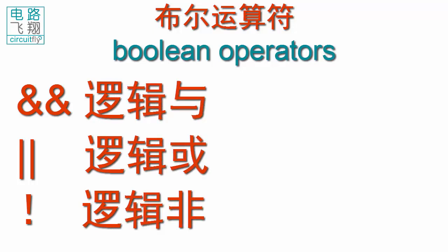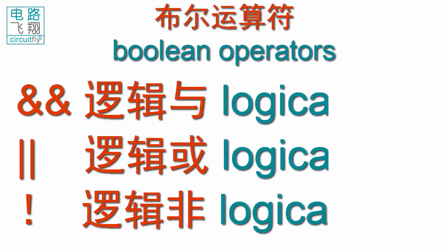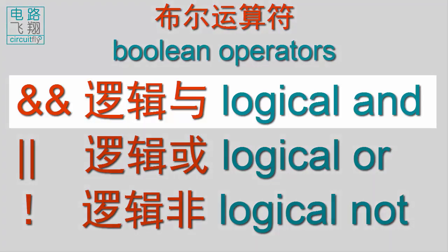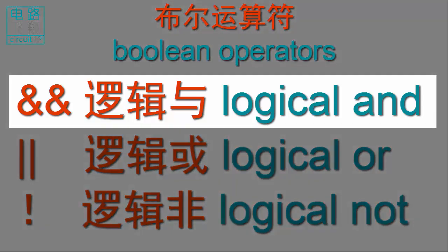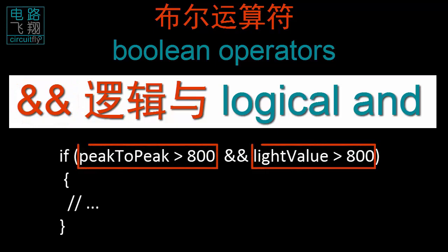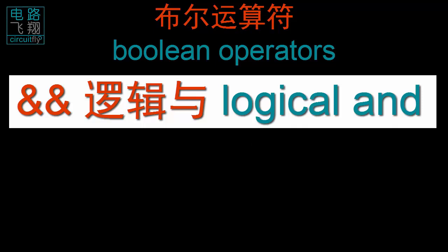Boolean operators can be used inside the condition of an if statement. 布尔运算符经常使用在if结构中，对组合条件进行判断。The logical AND operator uses two ampersand symbols (&&). The operation is true only if both operands are true. 只有逻辑与运算符前后两个操作数都为真值时，运算的结果才为真值。